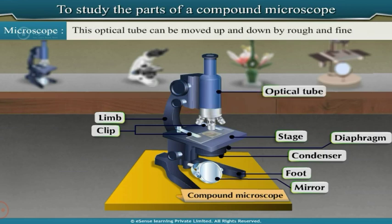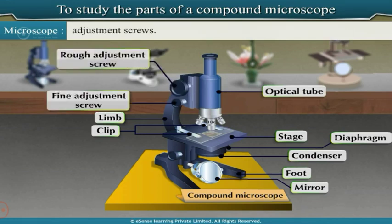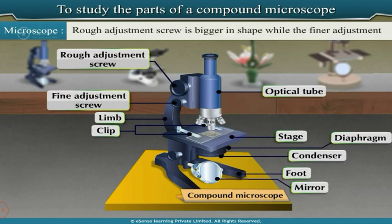This optical tube can be moved up and down by rough and fine adjustment screws. The rough adjustment screw is bigger in shape, while the finer adjustment is done by the smaller screw.